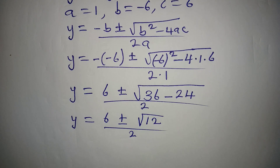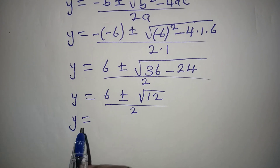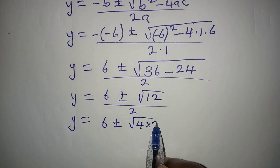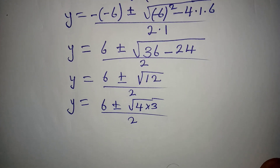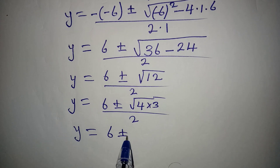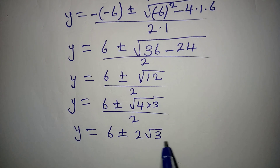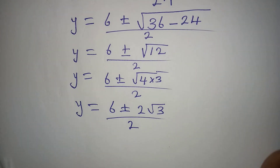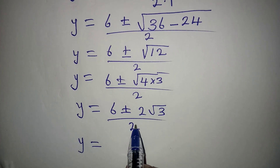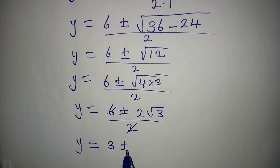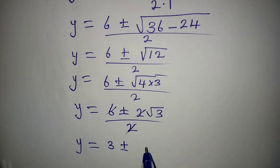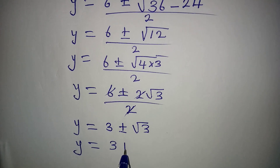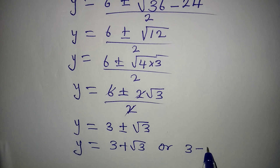Now, we can break 12 into 4 times 3. So we have 6 plus or minus the square root of 4 times 3, over 2. The square root of 4 is 2, so this becomes 6 plus or minus 2 root 3, over 2. The 2 cancels, giving y equals 3 plus or minus root 3. Therefore y equals 3 plus root 3, or y equals 3 minus root 3.